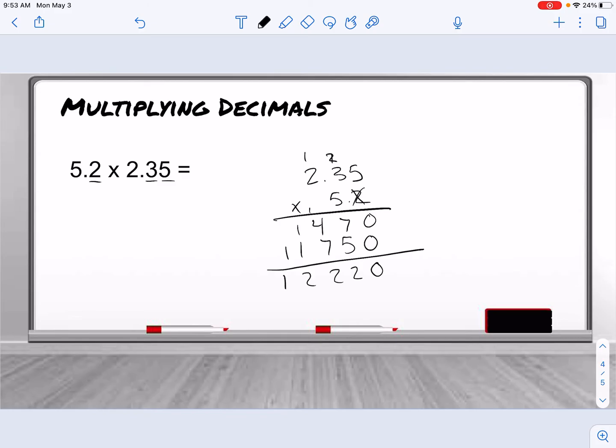And then remember we needed to move our decimal three times. So 1, 2, 3. We place our decimal and we have 12.22.